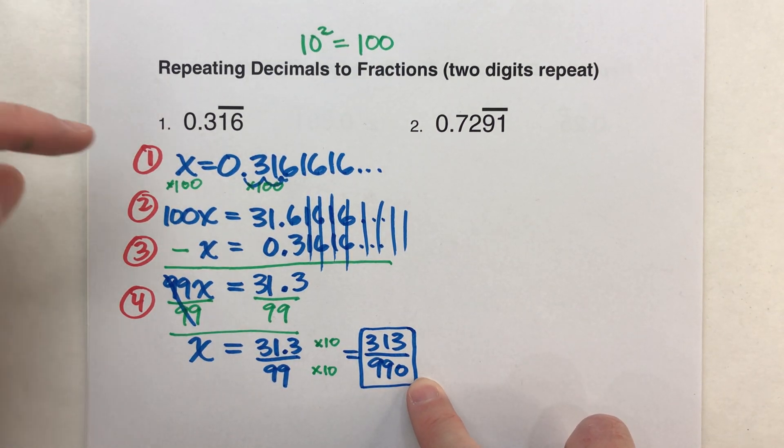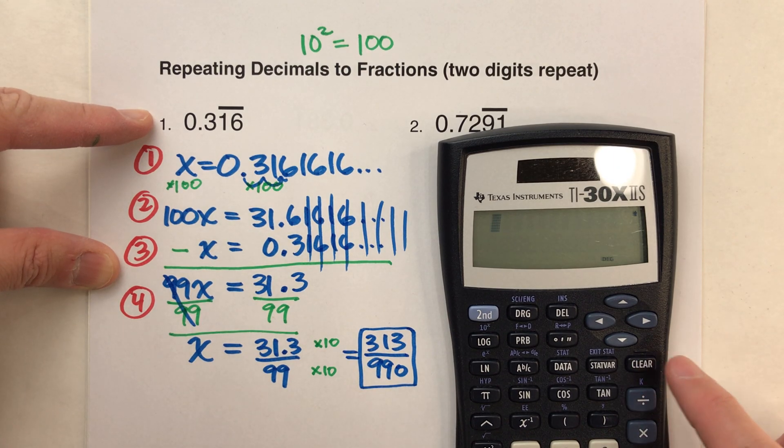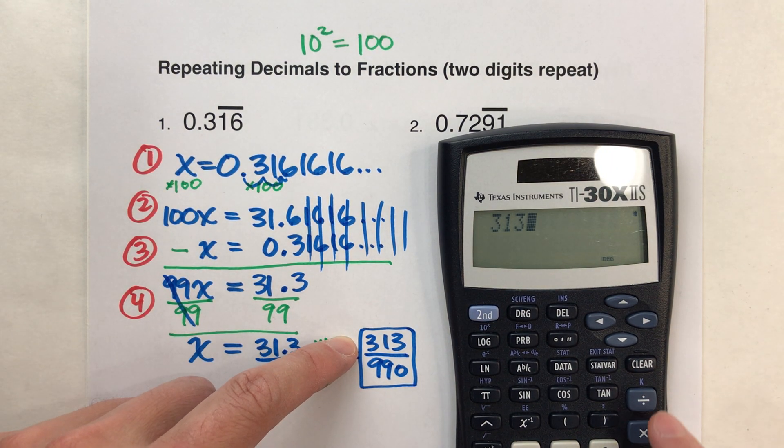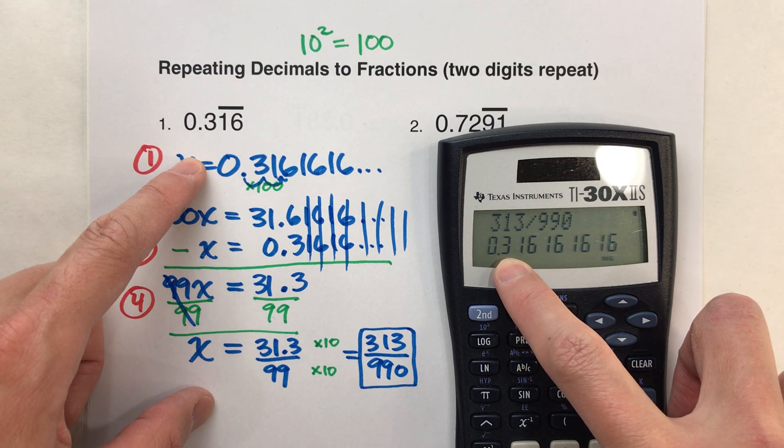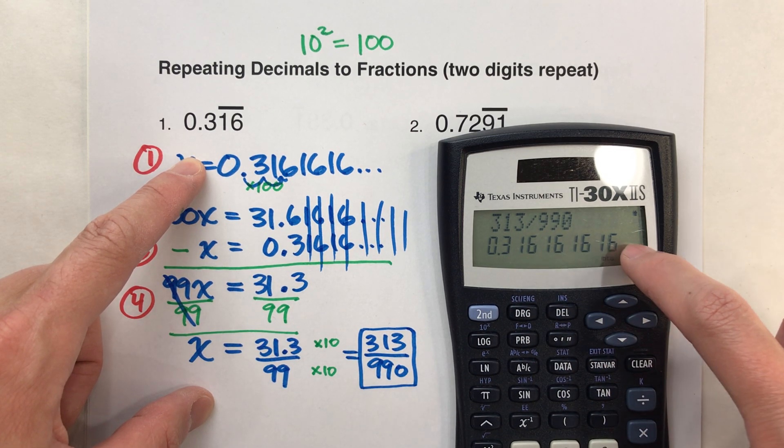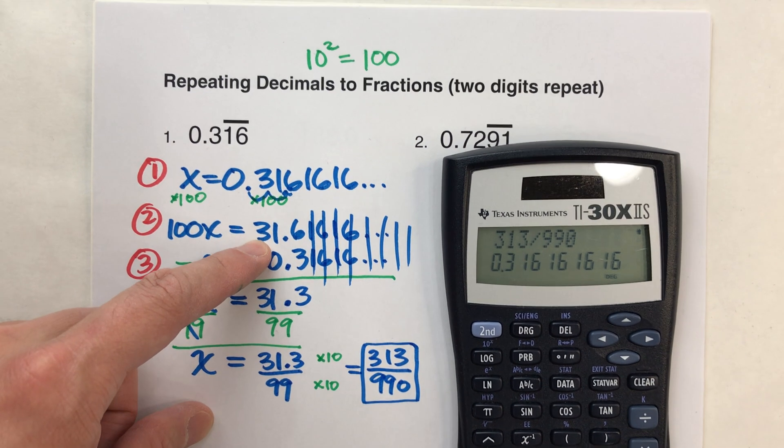So this fraction is equal to that repeating decimal. And of course, you can always check to make sure you're right using a calculator. 313 divided by 990. Look at that, .316161616. Exactly what we were expecting it to be.